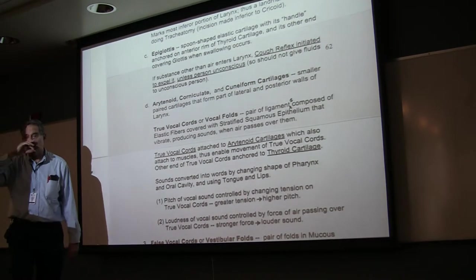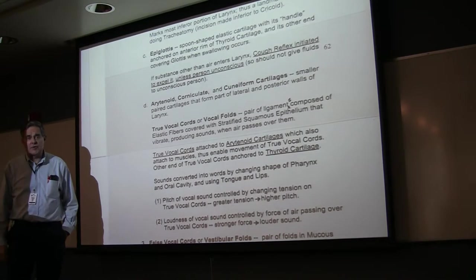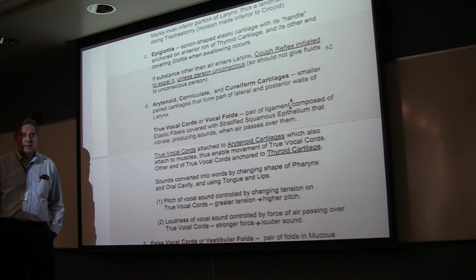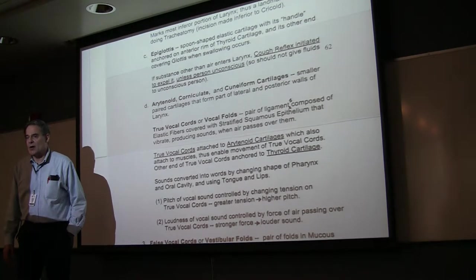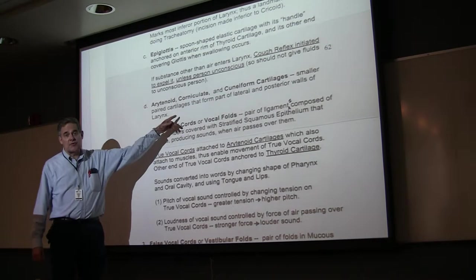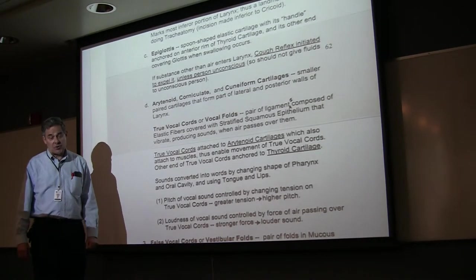The arytenoid are the larger cartilages. They're basically attached to the cricoid cartilage at the posterior aspect, kind of shaped like a right triangle. Attached to that and superior to it are a smaller pair of triangular shaped cartilages, which are the corniculate cartilages. And then the cuneiform cartilages are anterior, embedded in the soft tissue, also paired.